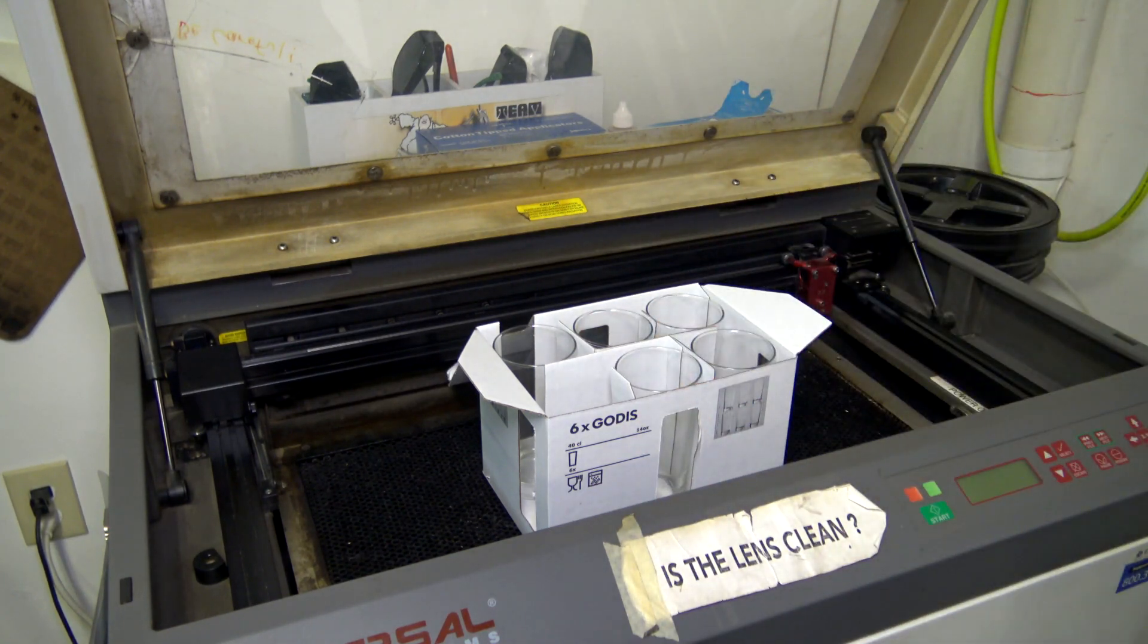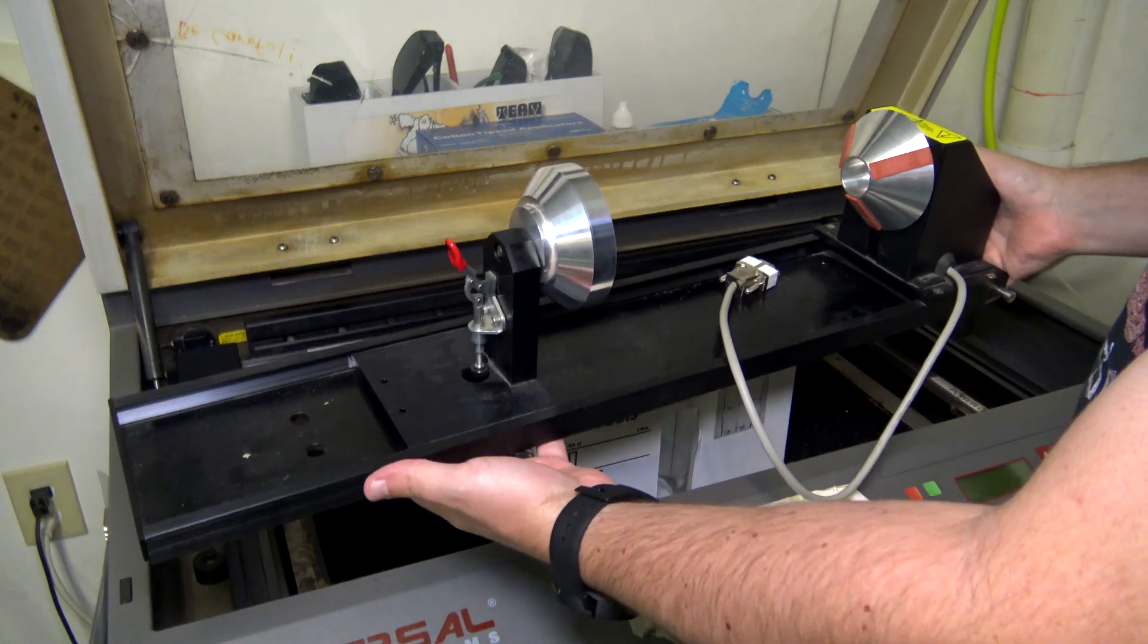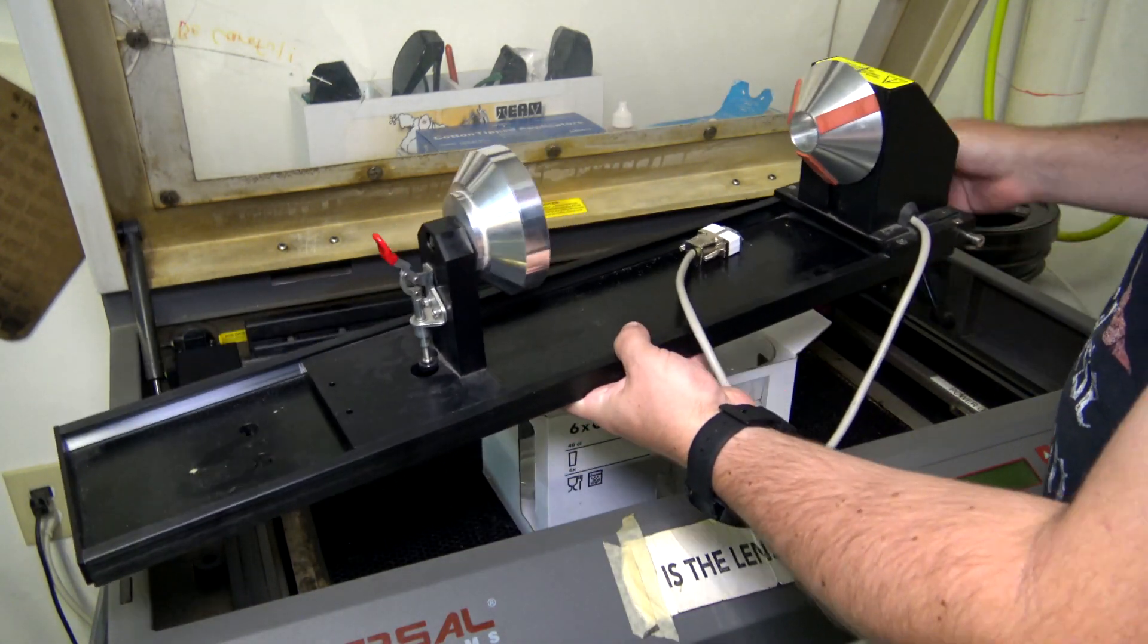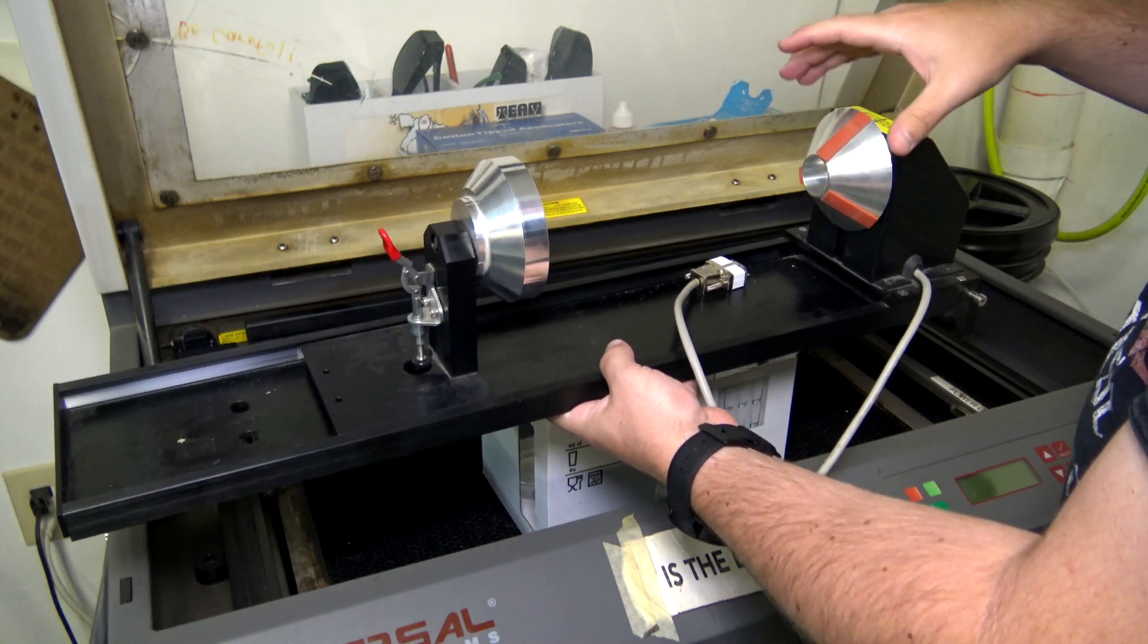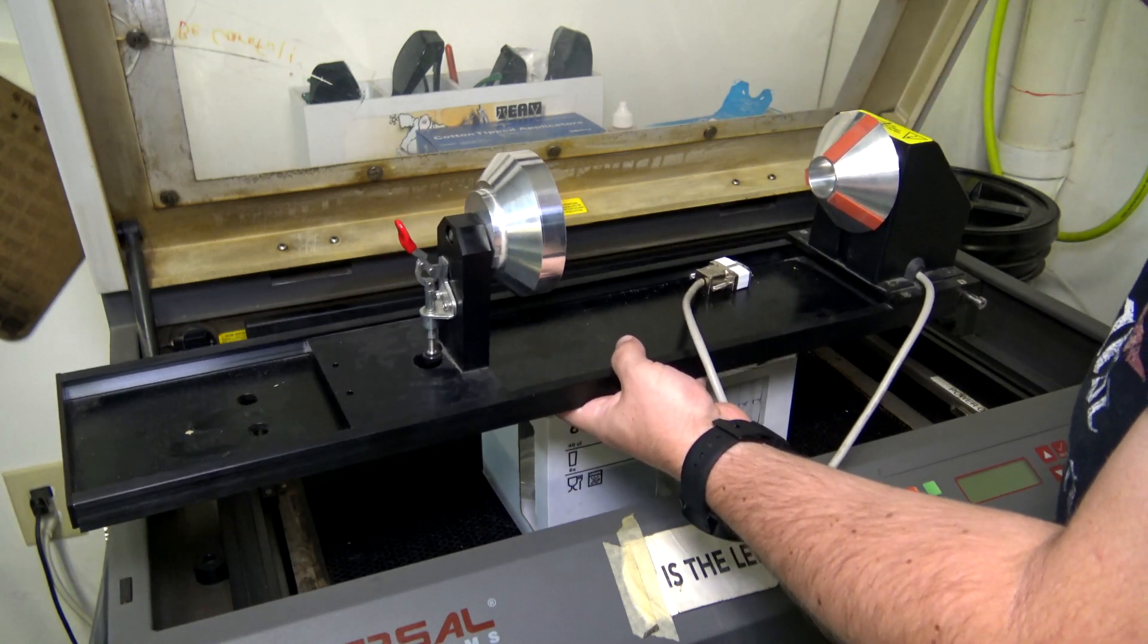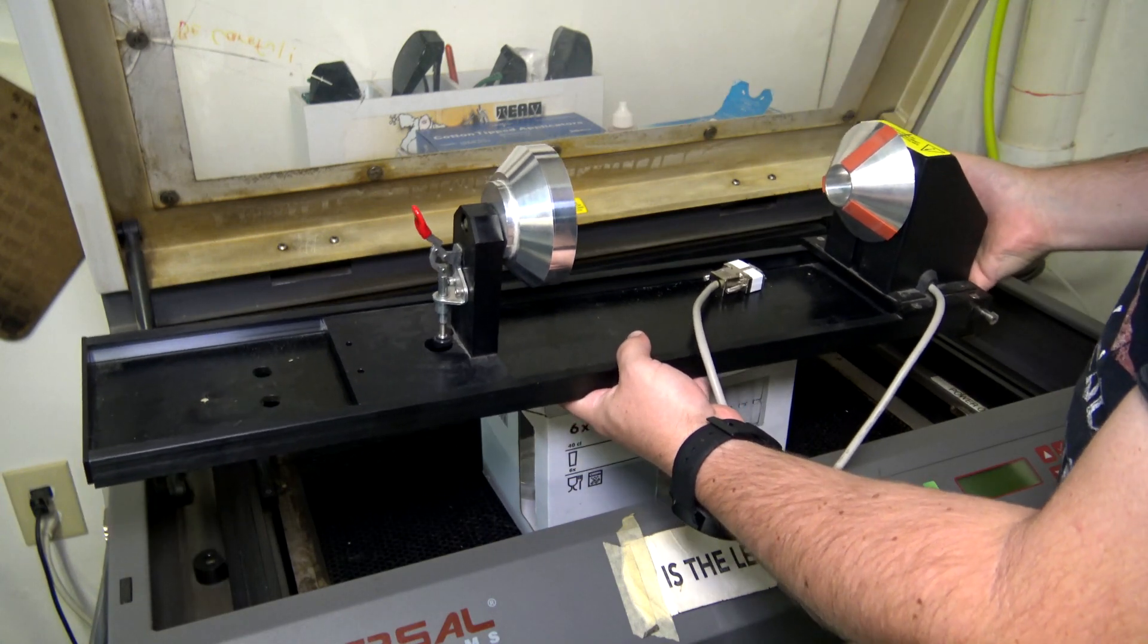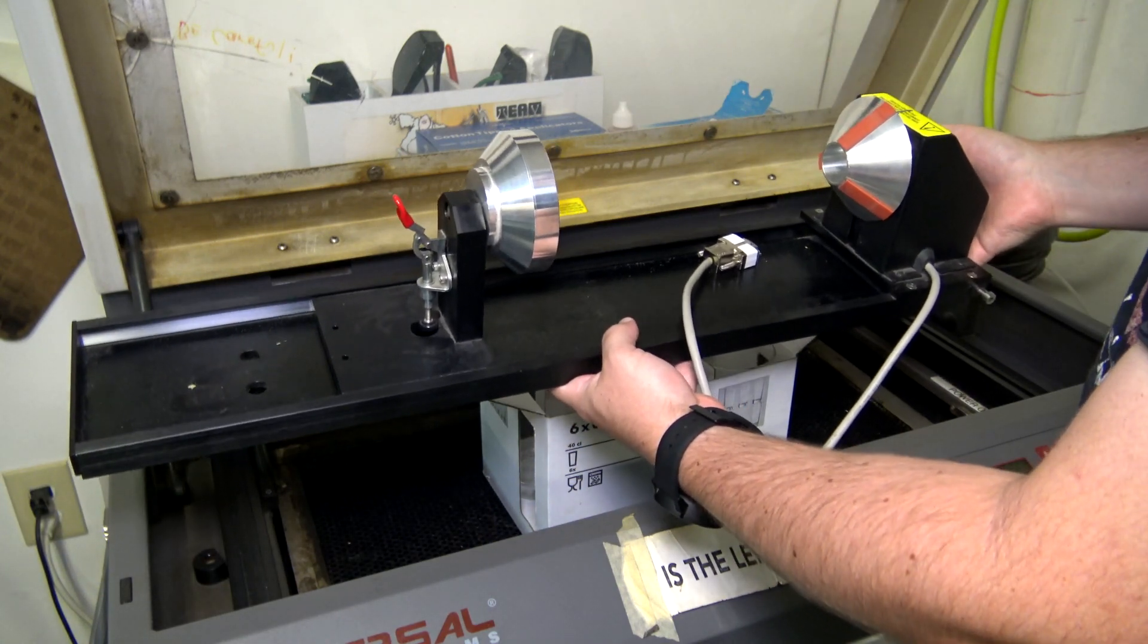Well luckily we have a special tool for that and it's called a rotary turntable. This will replace that flatbed and is basically a computer-controlled lathe that lets us mount our glasses onto it and then we can laser etch those cylindrical surfaces. So let's go take a closer look at this thing.